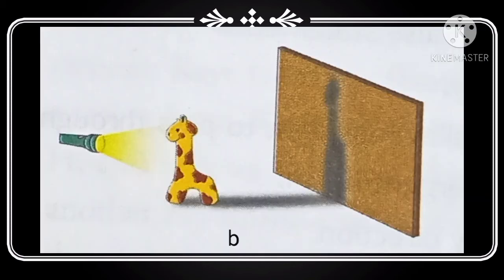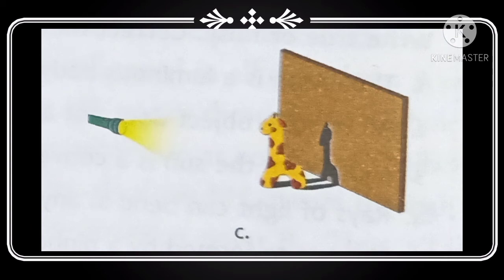Now we discuss the characteristics of a shadow. A shadow is always a dark area. It does not show the color of the object. Shadow may or may not look like the actual shape of the object. The size of shadow depends on the distance of the object from the source of light.